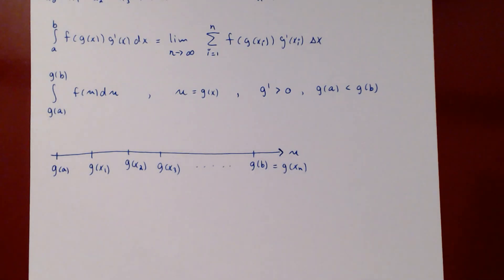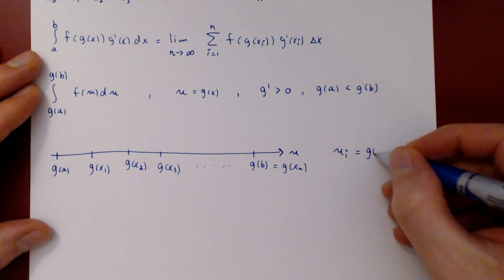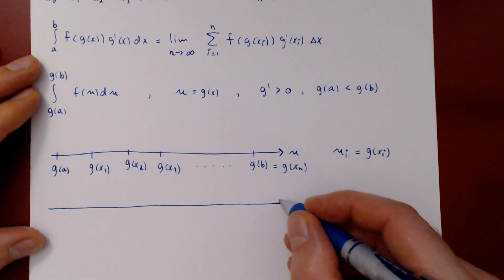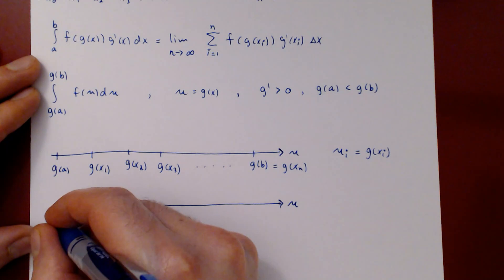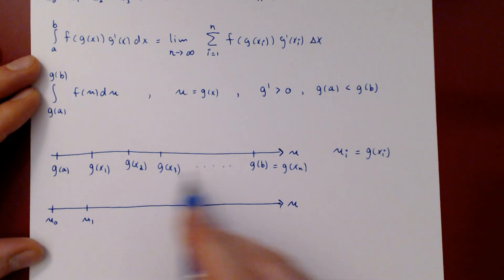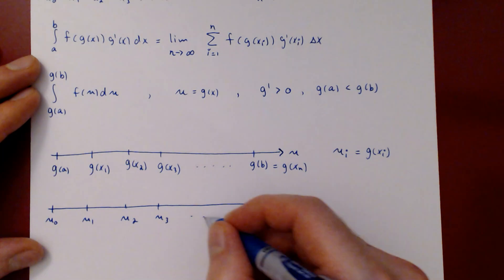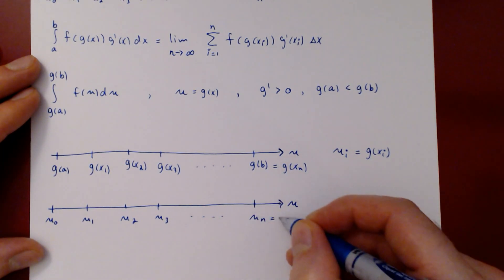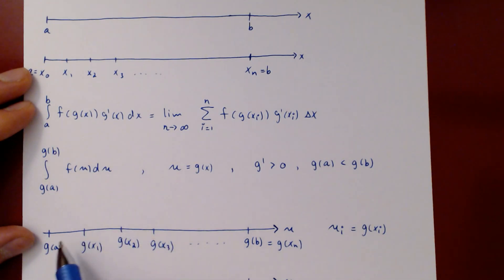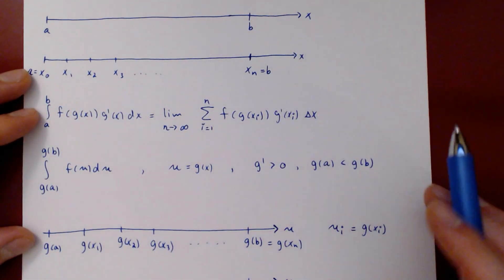To simplify notation, let u_i = g(x_i). So u_0 = g(x_0), u_1 = g(x_1), u_2 = g(x_2), u_3 = g(x_3), up to u_n = g(x_n) = b. This is the key step: not building the partition on the u-axis from scratch, but using the one inherited from the original partition of [a,b] along the x-axis.